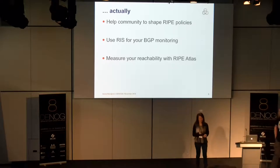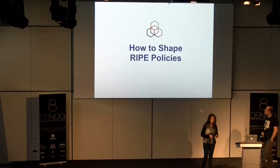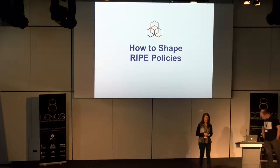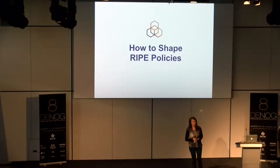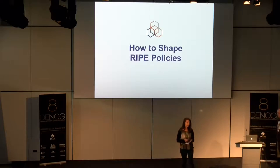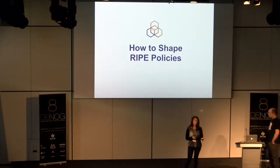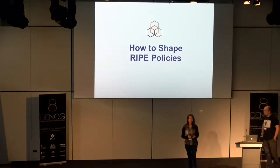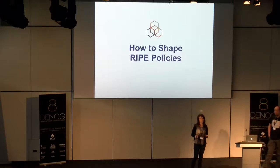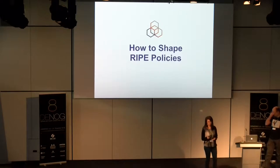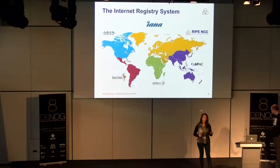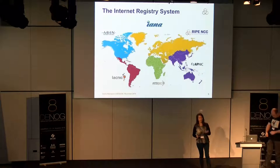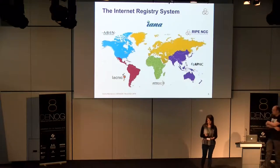I'll be the first one, hopefully less than 10 minutes, telling you how can you change the addressing policies or why is this even important. The addressing policies of RIPE influence how you run your business if you need IP addresses, either a business or maybe a hobby project. So how are these addresses distributed? It's a hierarchical system and there are five regional internet registries, one for every continent, and in Europe that is RIPE NCC.